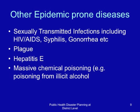Other epidemic-prone diseases include sexually transmitted infections including HIV/AIDS, syphilis, gonorrhea and others, plague, hepatitis E, and massive chemical poisoning — especially from illicit alcohol, which is becoming a common public health problem in Eastern Africa.